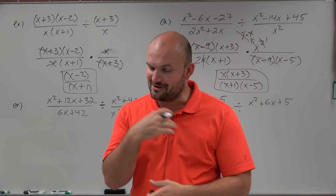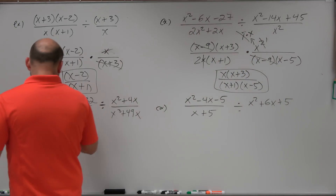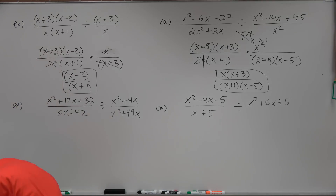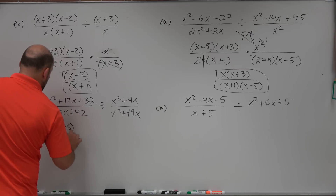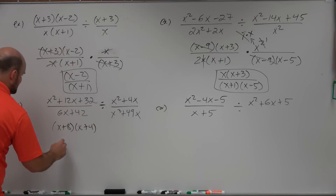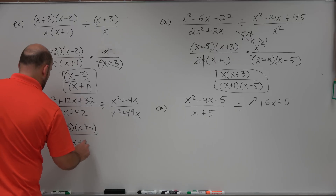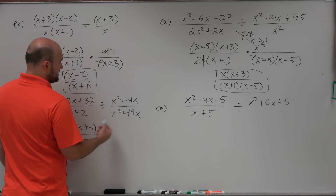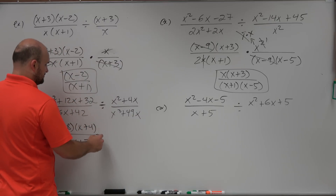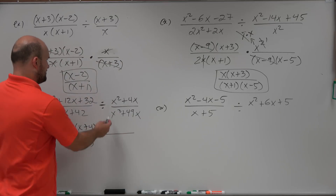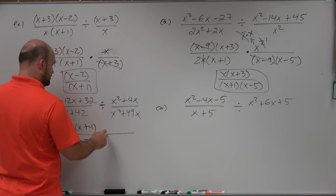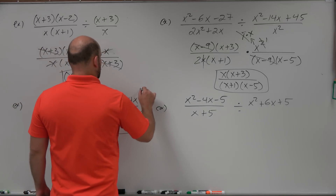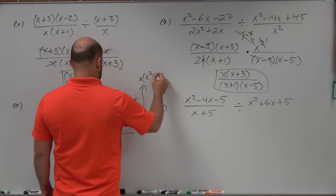For the next example, we factor, then reciprocate. Two numbers that multiply to 32 and add to 12 are 8 and 4, so that factors to (x+8)(x+4). I can factor out a 6, leaving (x+7). Remember — you only flip the second term, not the first. I'm going to write this as one massive problem. Flipping the divisor puts it in the numerator, and I can factor out an x, leaving x²-49.